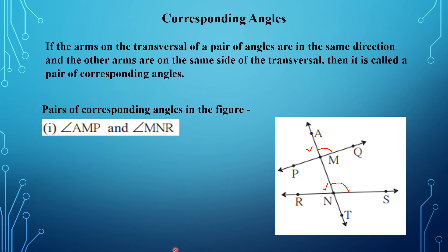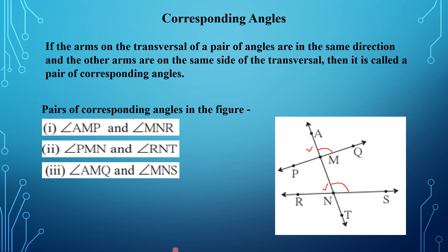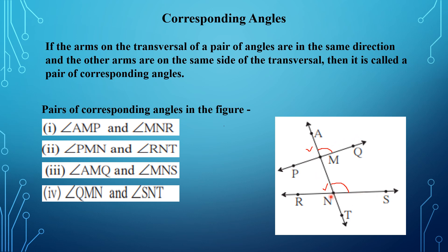The four pairs of corresponding angles are: first, angle AMP and angle MNR; second, angle PMN and angle RNT; third, angle AMQ and angle MNS; fourth, angle QMN and angle SNT. So total four pairs of corresponding angles are formed by the transversal.